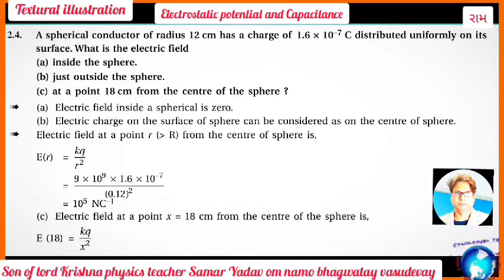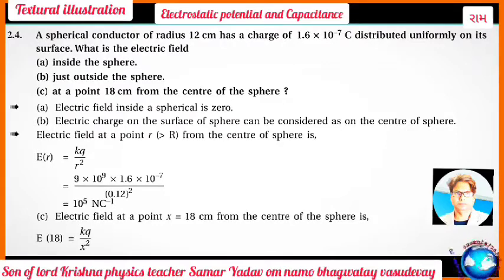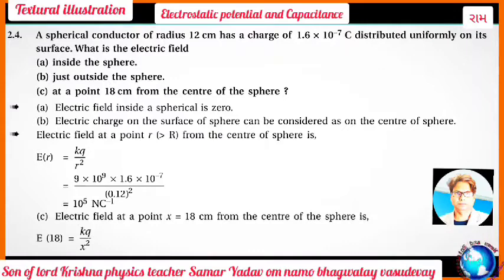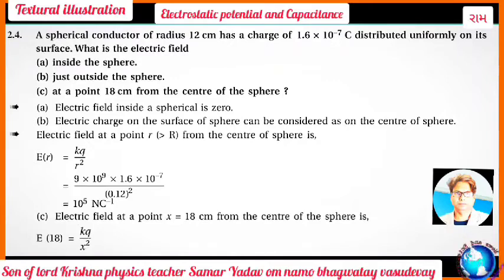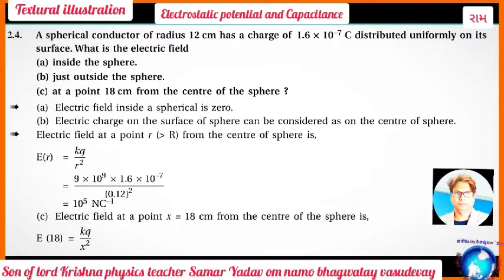A spherical conductor of radius 12 cm has a charge of 1.6×10⁻⁶ coulomb distributed uniformly on its surface. What is the electric field: inside the sphere, just outside the sphere, and at a point 18 cm from the center of the sphere? Part A: